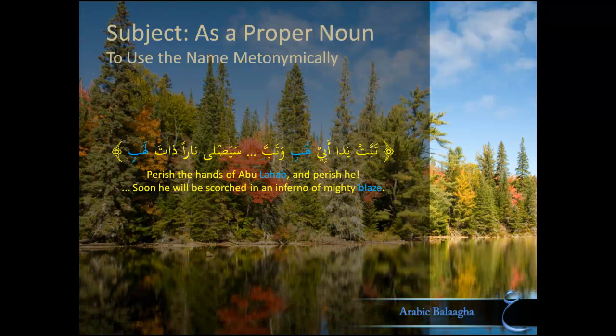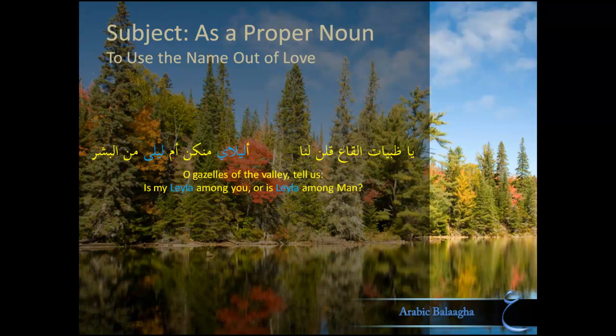Abu Lahab is not quite the subject in this ayah, but you get the point of using his name metonymically. The third benefit is to use the name to show how much you love the subject and how much pleasure you derive from the name, because when two people are really in love, even each other's names are lovely to them. Like Majnoon Layla says: 'O gazelles of the valley, tell us, is my Layla among you, or is Layla among mankind?' He's saying Layla's magnificence is so great that it eludes him whether she is human or a majestic gazelle. Notice he said 'Layla' twice, whereas he could have used a pronoun the second time. This unnecessary repetition of the subject's name shows his obsession and love.